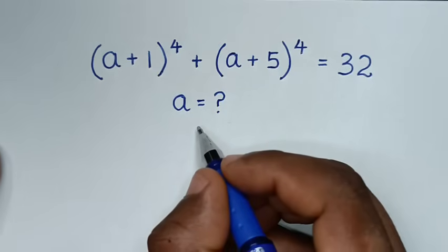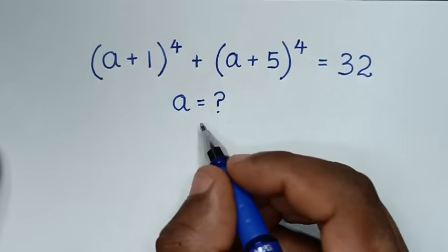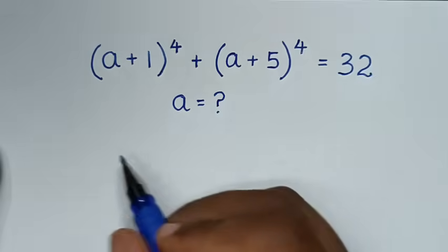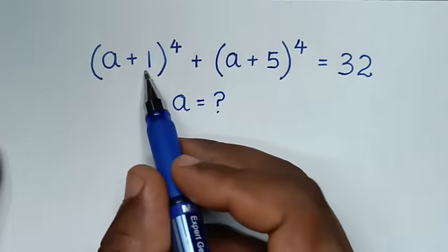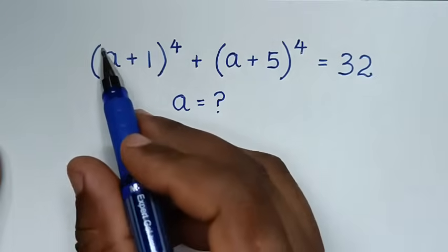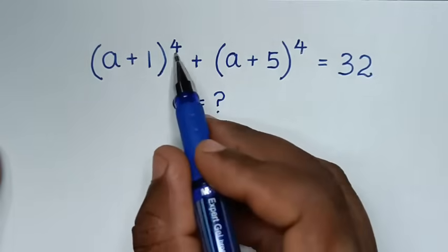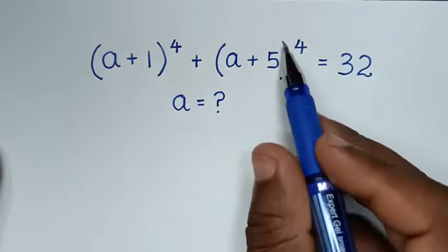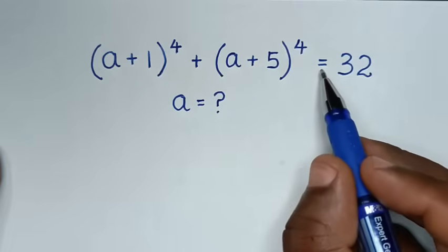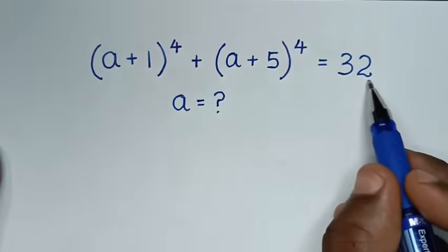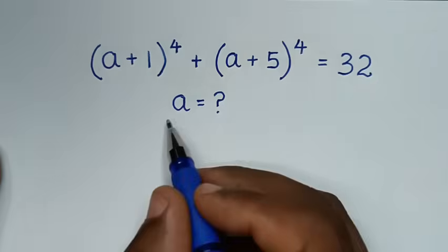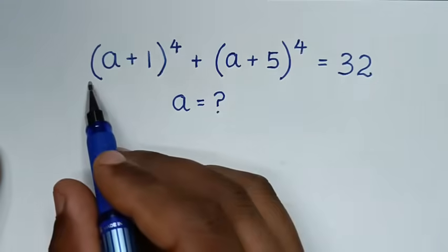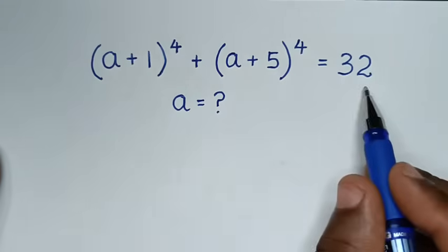Hello, you are welcome to solve this math problem, which is (a + 1)⁴ + (a + 5)⁴ = 32. We need to find the values of a from this equation.